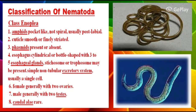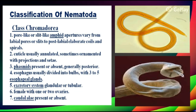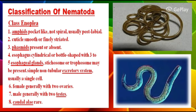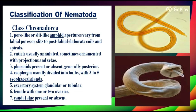The second class is Chromadoria. Its features include: amphids that are pore-like or slit-like, with apertures varying from labial pores or slits to post-labial elaborate coils or spirals. The cuticle is usually annulated, sometimes ornamented with projections. Phasma is present or absent, usually gradually posterior. The esophagus is usually divided into two bulbs with 3–5 esophageal glands. The excretory system is glandular or tubular. Females have one or two ovaries. Caudal glands are present or absent.